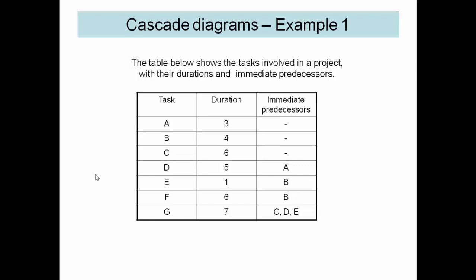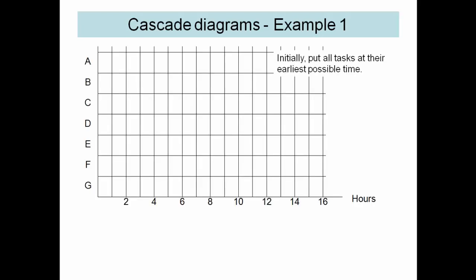So here we look at the table with the project. To enter things onto the cascade diagram, we put things at their early start time. So we can initially put all the tasks that start at zero: A, B, and C. And you can see here we have the duration of each task. A has the duration of 3, B4, and C6.